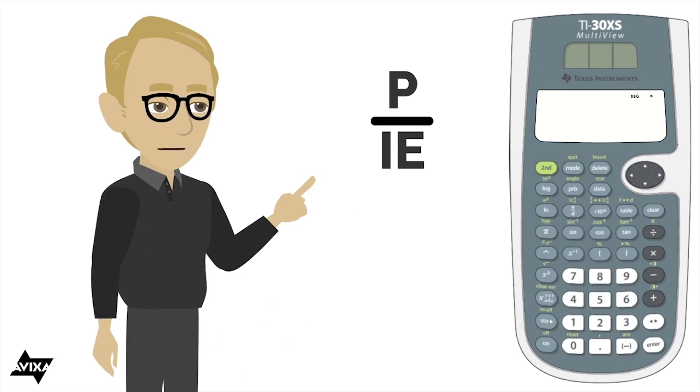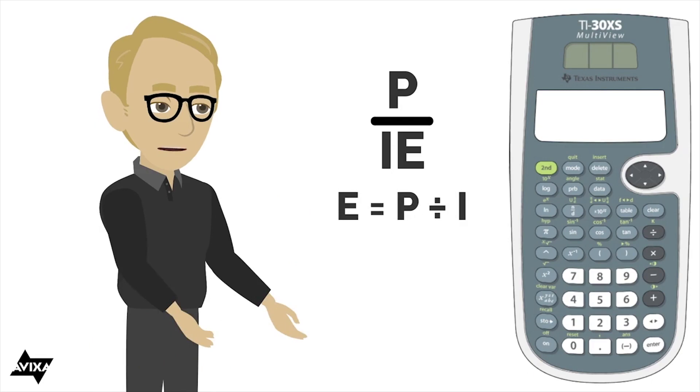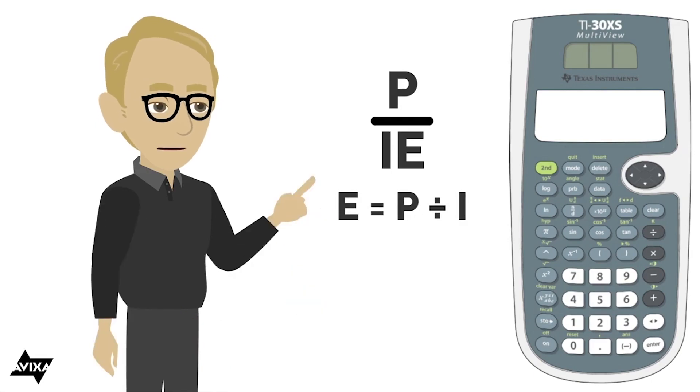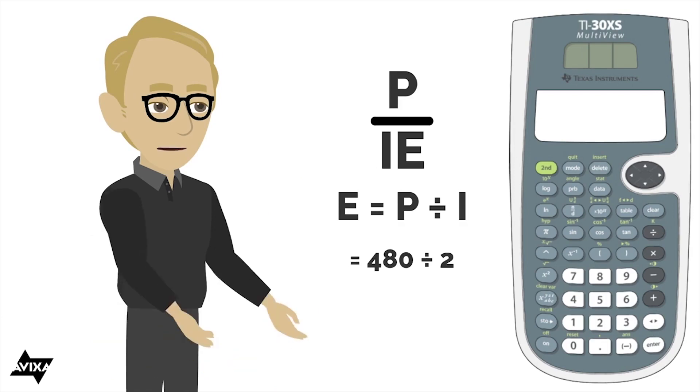And let's do one more. Let's do a voltage. So voltage equals power divided by current. And let's say the power being consumed in the circuit is 480 watts. The current draw is 2 amperes worth of current. So 480 divided by 2 tells us that the voltage in this circuit would be 240 volts.